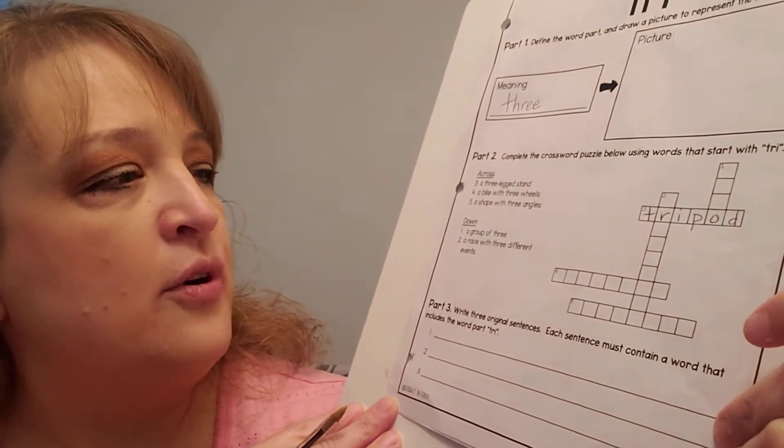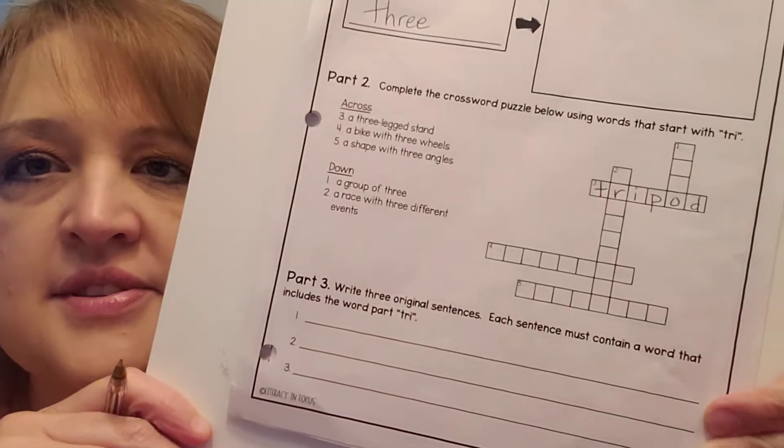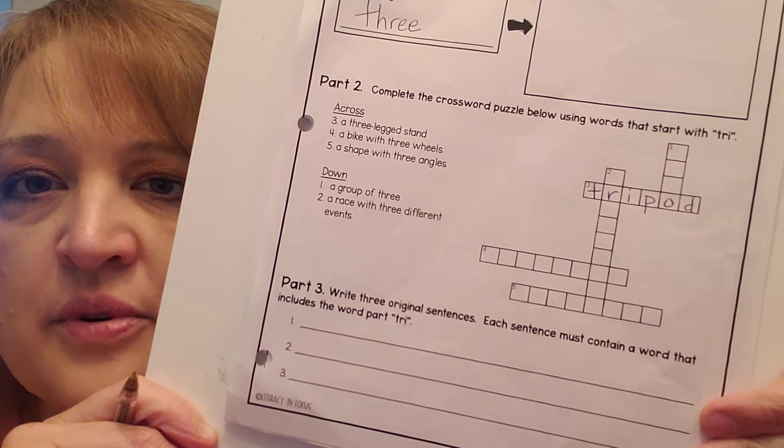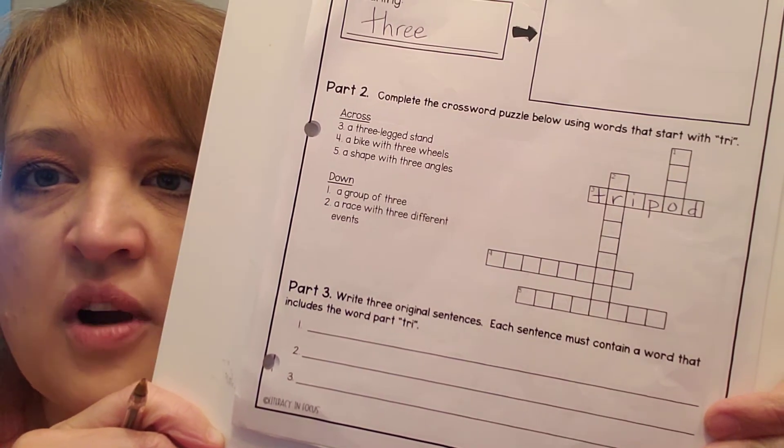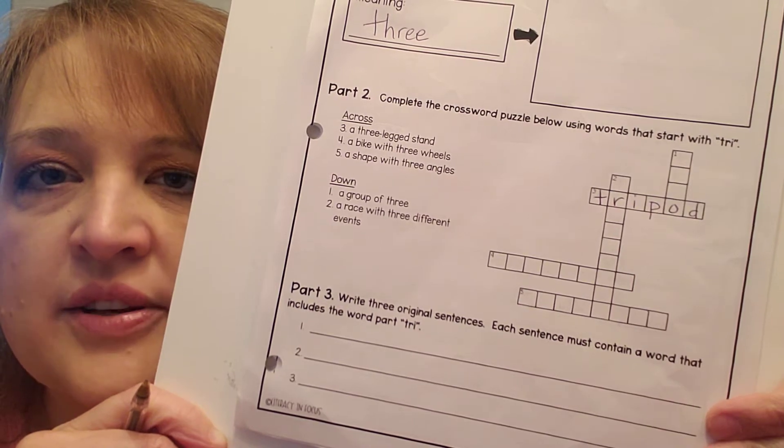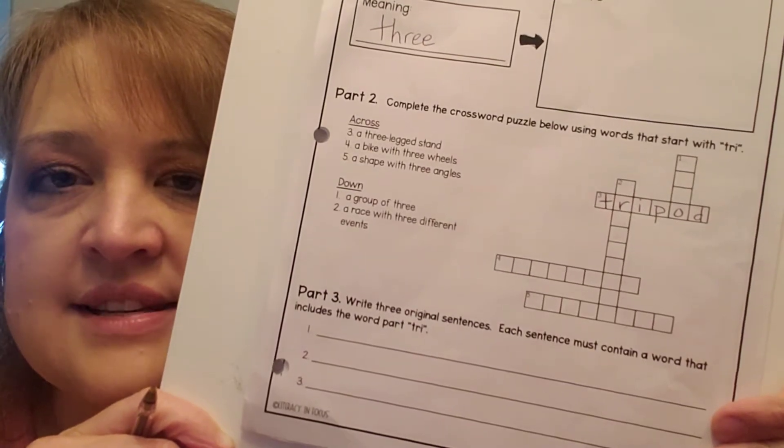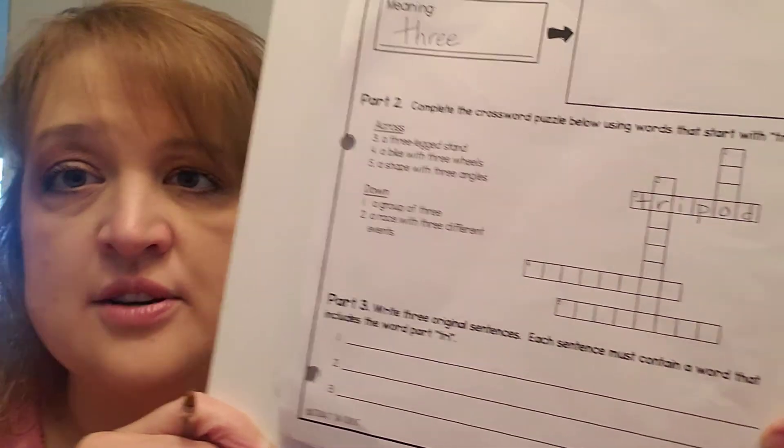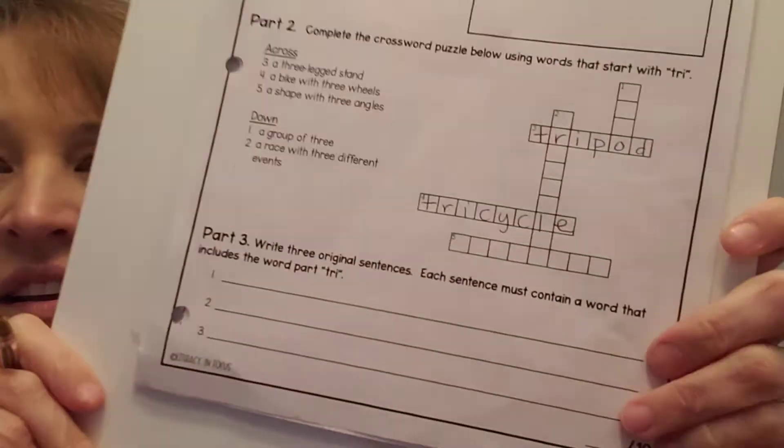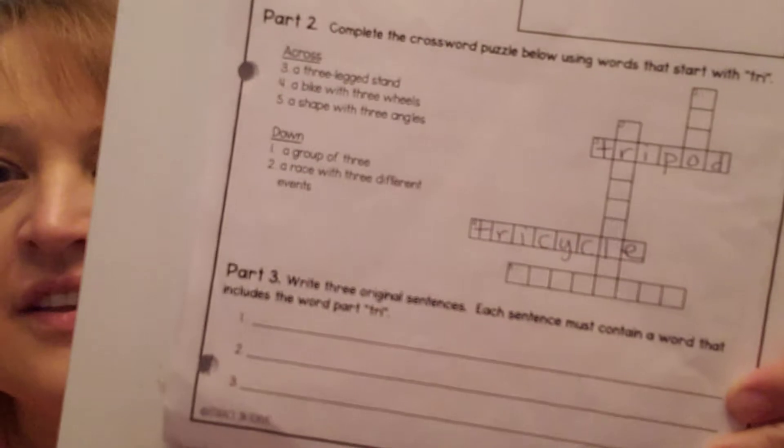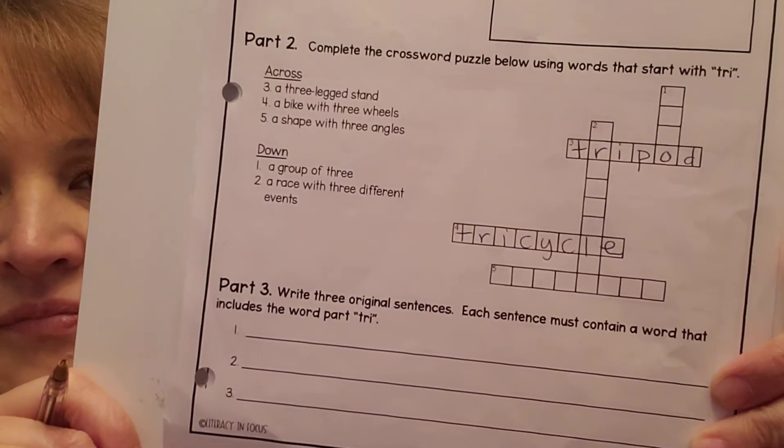All right, four across. A bike with three wheels. Well, you probably rode this when you were a preschooler. It's a tri what? What means bike or wheels? Cycle. Tricycle. Cycle is circle. Tri means three and cycle is circle or wheels. So it is a tricycle. Tricycle. Three wheels.